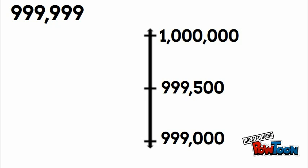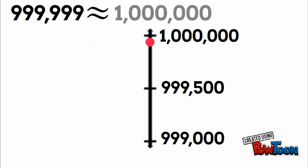Our number is just below one million, so that's where our dot goes. We see we're going to round up — so even though we're rounding to the nearest thousand, this would actually round up to one million.